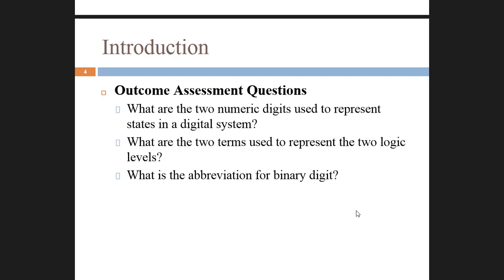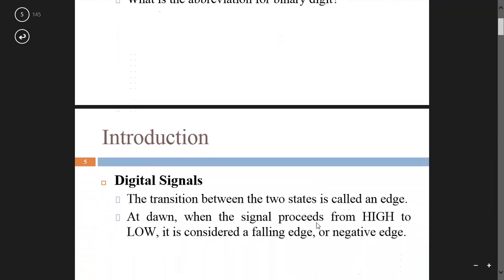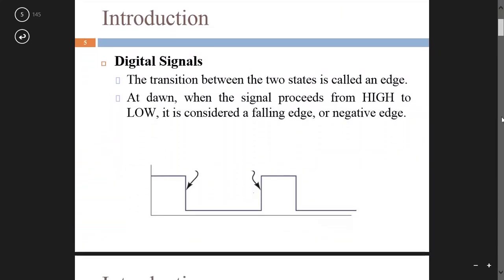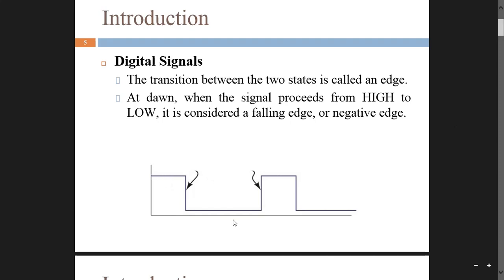The two terms used to represent the two logic levels are logic level zero and logic level one. The abbreviation for binary digit is 'bit'. When there is a transition from logic level one to logic level zero it is called a falling edge. When the transition is from logic level zero to logic level one, it is called a rising edge.